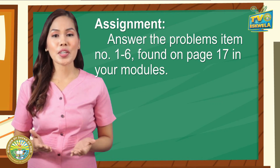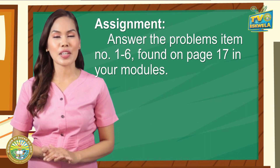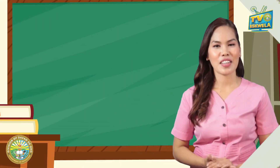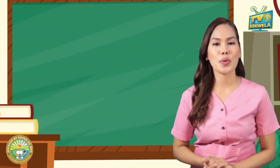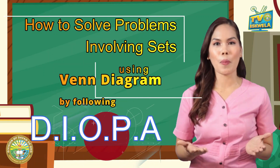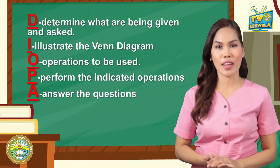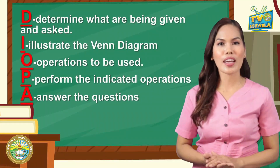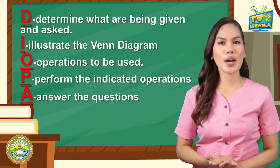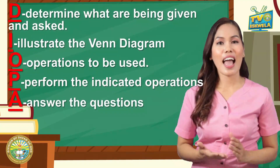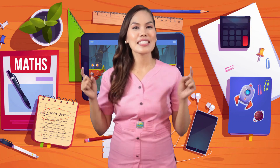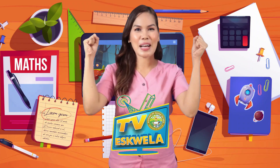Now for your assignment: answer problems item number 1 to 6 found on page 17 in your modules. Use a separate sheet of paper. I hope you got my instructions. Just a quick recap: today we learned to solve problems involving sets using Venn Diagram by following the DEUPA. D — determine what are given and asked. I — illustrate the Venn Diagram. O — operations to be used. P — perform the indicated operations. A — answer the questions. It has been a fun minutes of learning. I am teacher Perl Faith Pagas saying, Dito sa TV Eskwela, sa pag-aaral, sama-sama. Bye-bye!